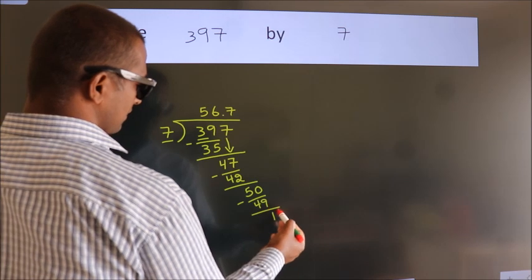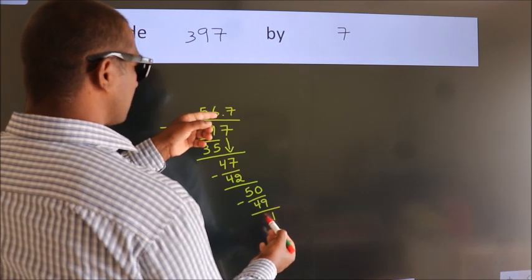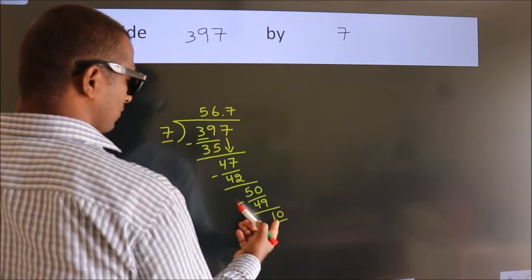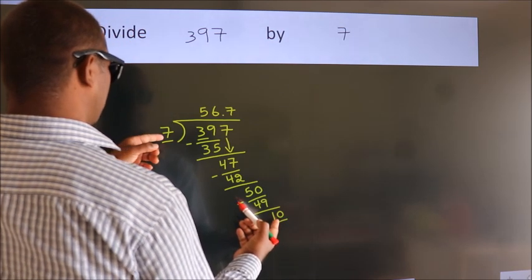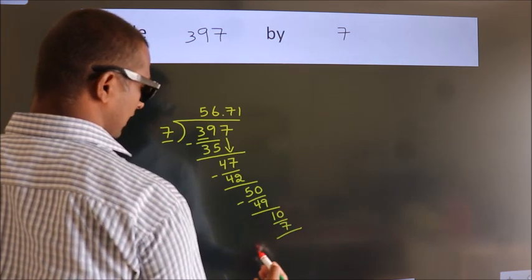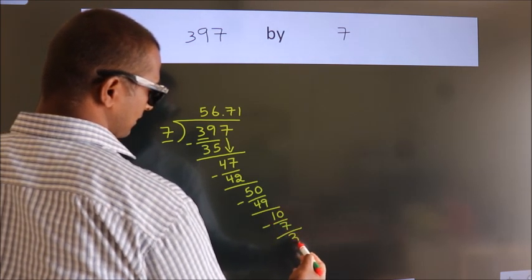After this, we already have the decimal, so we directly take 0. So 10. A number close to 10 in the 7 times table is 7 times 1 equals 7. Now we subtract and get 3.